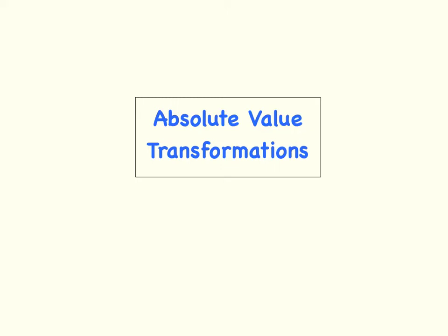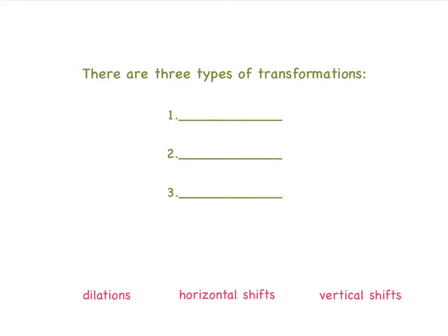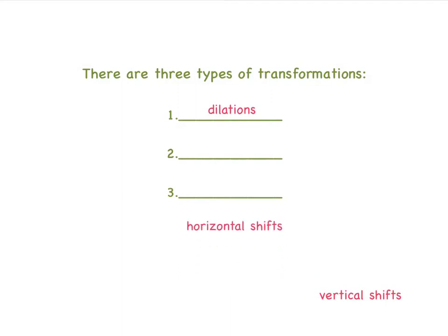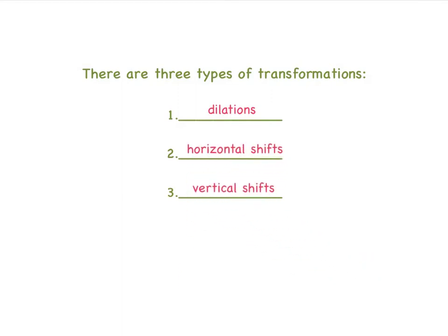Hi, this is Mrs. Widerholt and welcome to my lesson video on absolute value transformations. Now let's get started. For any parent function, there are three types of transformations: dilations, horizontal shifts, and vertical shifts. Now we will learn about each type individually.